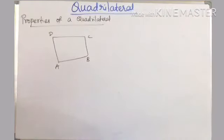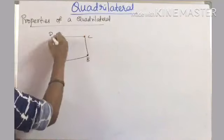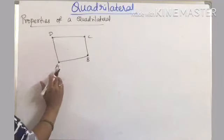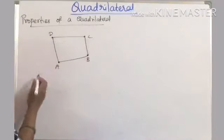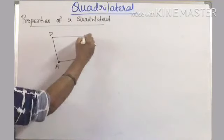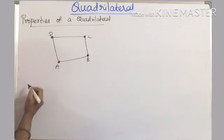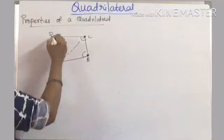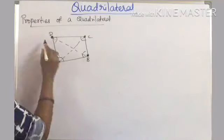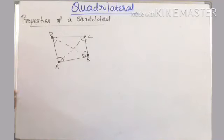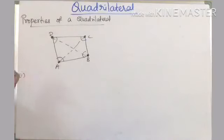Coming to properties of a quadrilateral — here is a quadrilateral named ABCD. We should read the name in a continuous order. It has four vertices, four angles, four sides, and two diagonals. The line segment joining the opposite vertices is called a diagonal. The first property is: a quadrilateral has four sides, four angles, and four vertices.